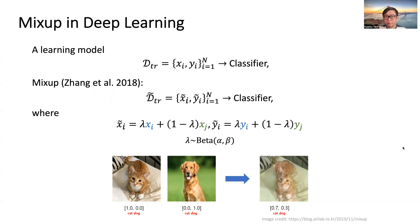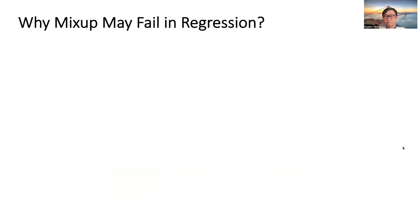However, it sometimes fails in regression. Why may Mixup fail in regression? We claim that directly applying Mixup in regression may produce arbitrary labels.